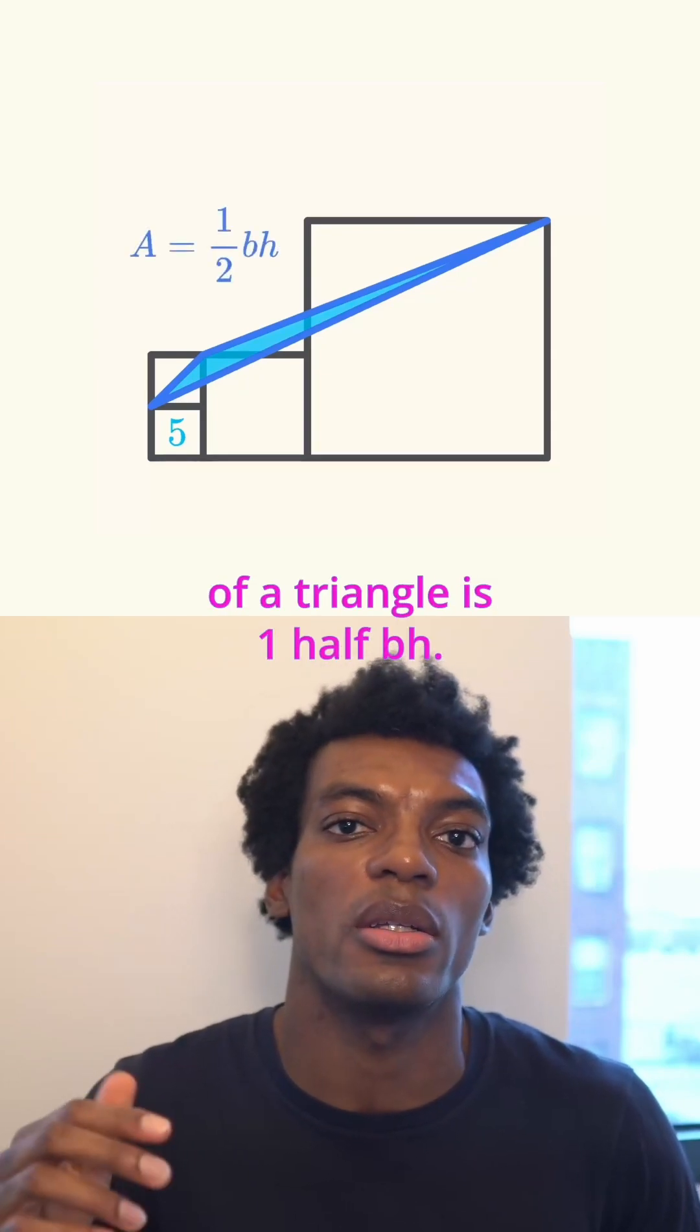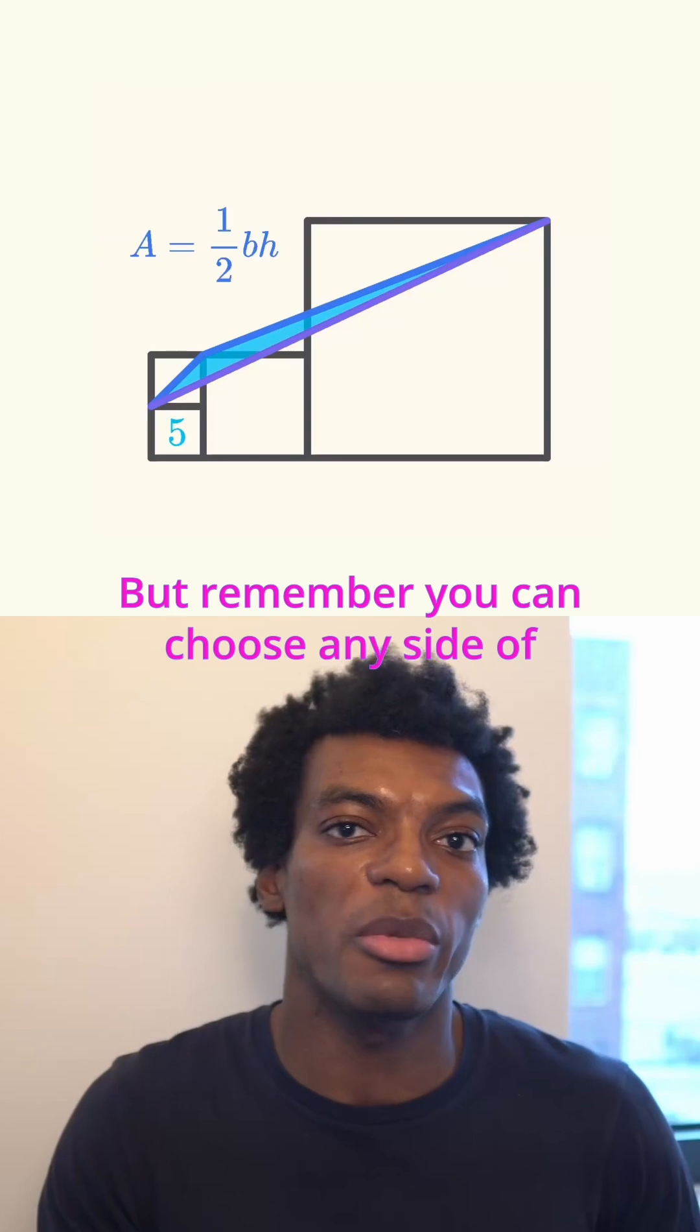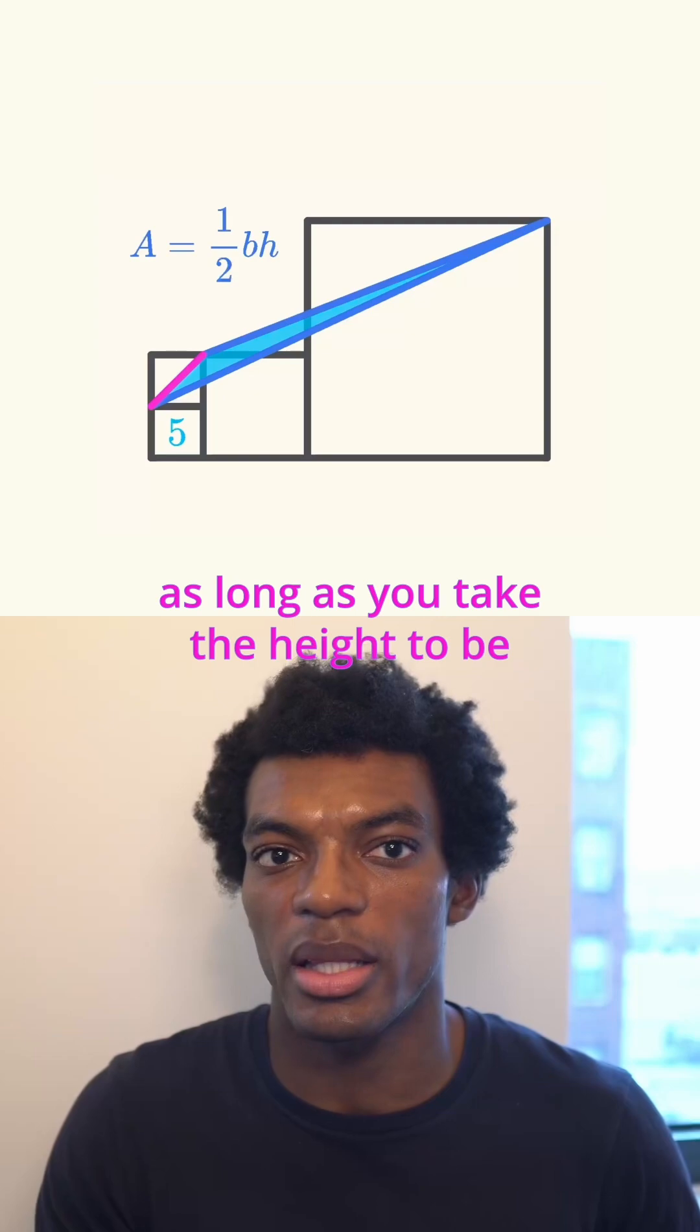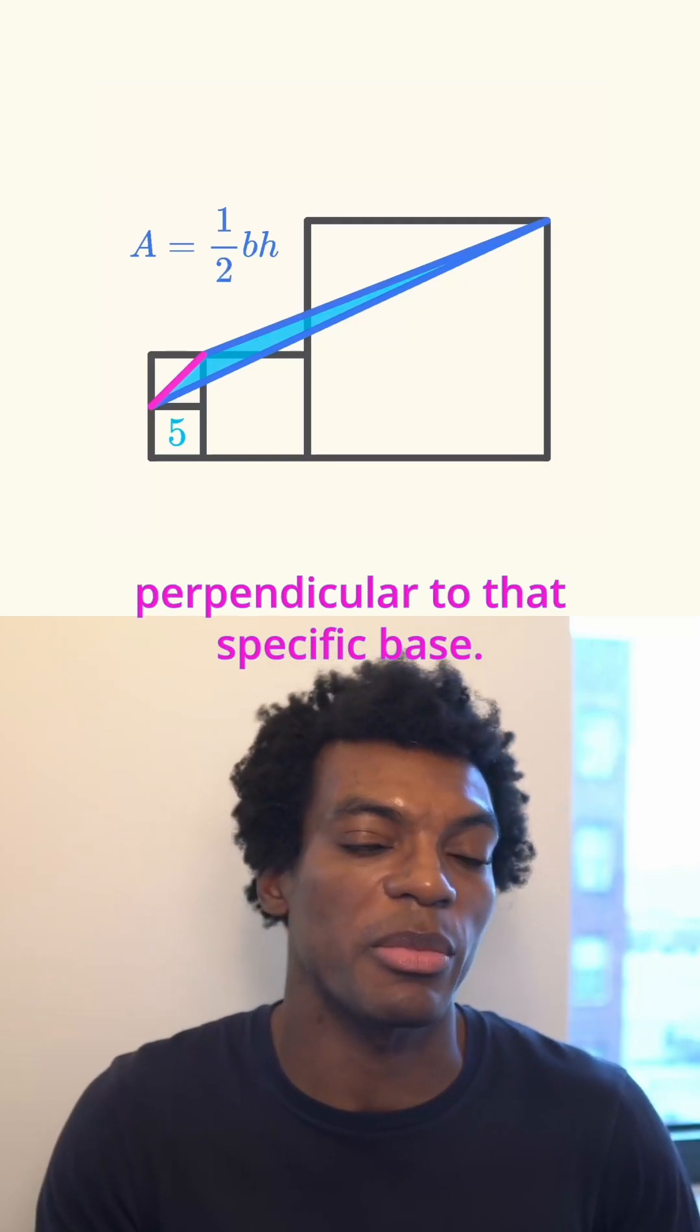The formula for the area of a triangle is ½bh, but remember you can choose any side of the triangle to be the base as long as you take the height to be perpendicular to that specific base.